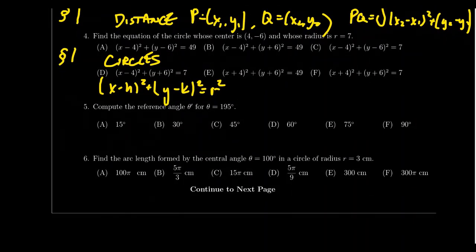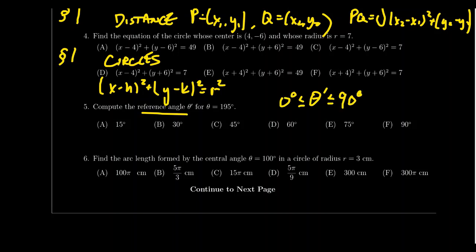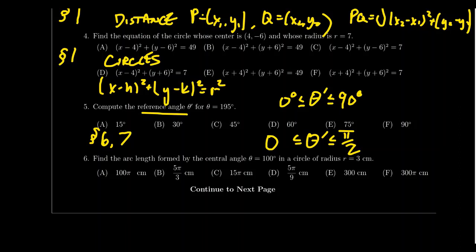Question number five will ask you to compute a reference angle. You'll be given an angle measure — like 195 degrees — and asked to find its reference angle. The reference angle always lives in the first quadrant, so it's between 0 and 90 degrees, but it could also be given in radians, in which case the answer will be between 0 and π/2. Reference angles were introduced in lecture 6, and lecture 7 extended this to radian measure.